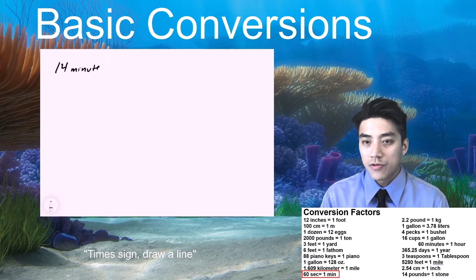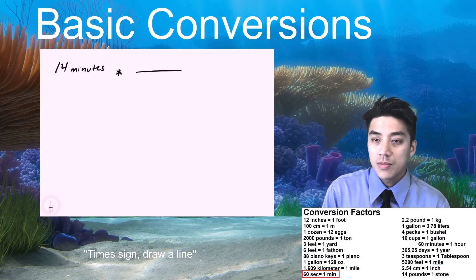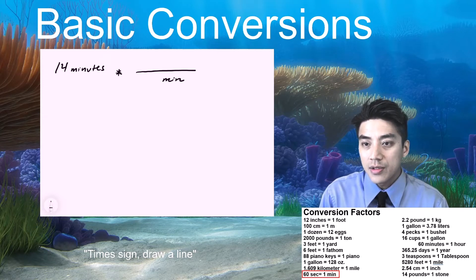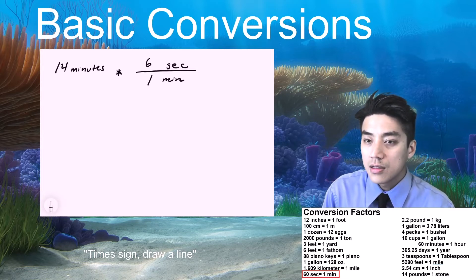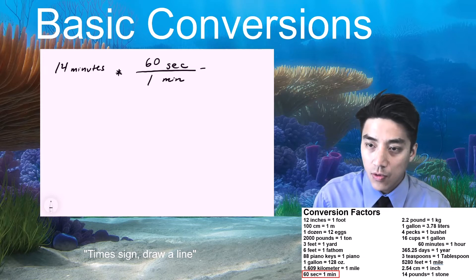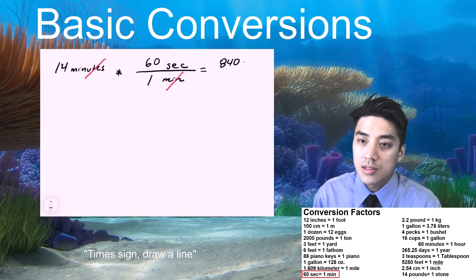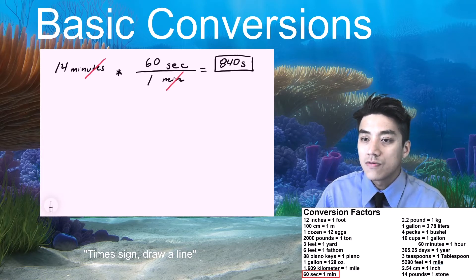Problem number 2. Convert 14 minutes to seconds. I'm going to write down what I have. 14 minutes. Time sign, draw a line. If minutes is on top, minutes has to go on the bottom, diagonally to it. Seconds on top. And then the conversion factor is 60 seconds for 1 minute. Everyone knows that. Make sure your units cross-cancel. And then just multiply 14 by 60 to get 840 seconds.